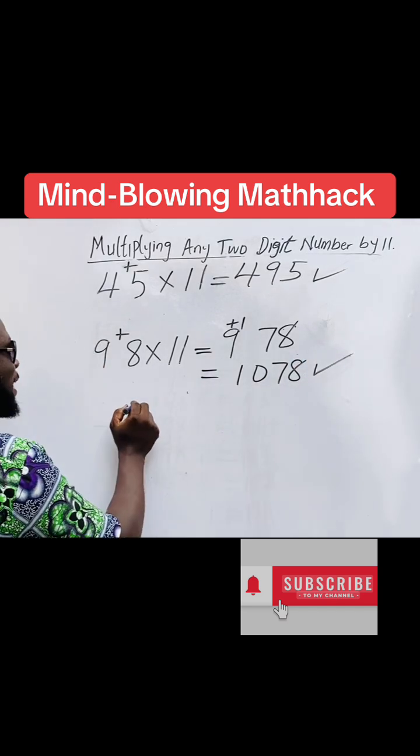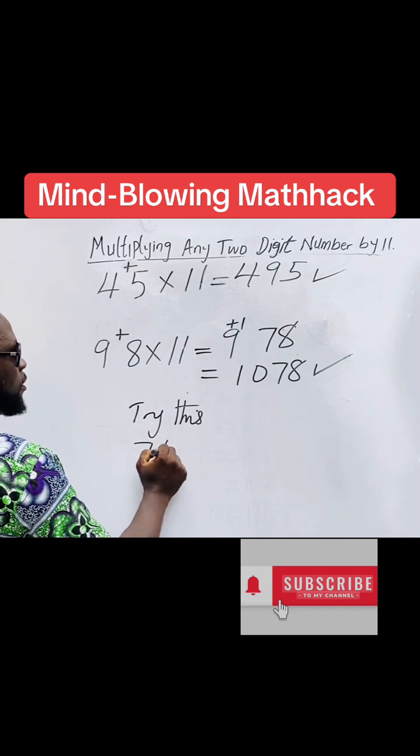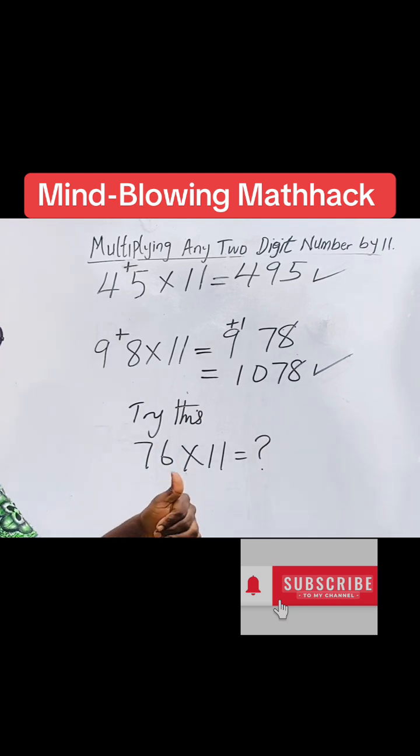So with this understanding, try this: 76 times 11 equals to. Drop your answer in the conversation. Thank you.